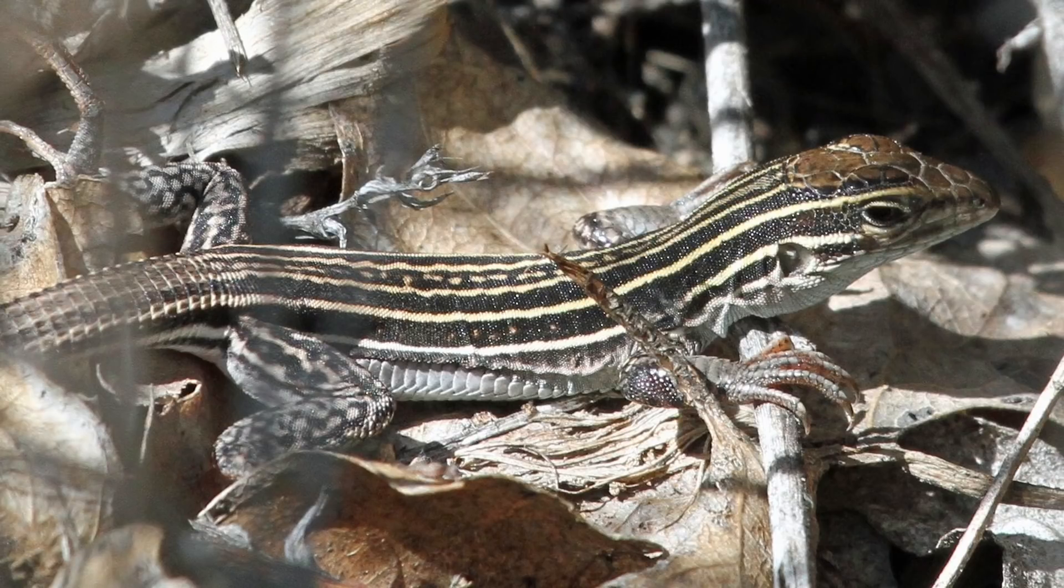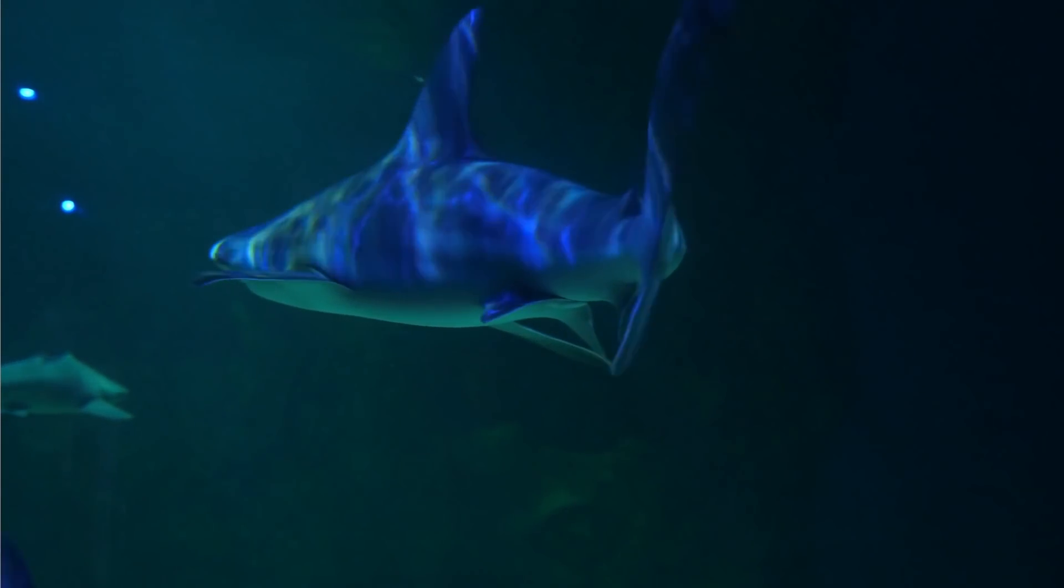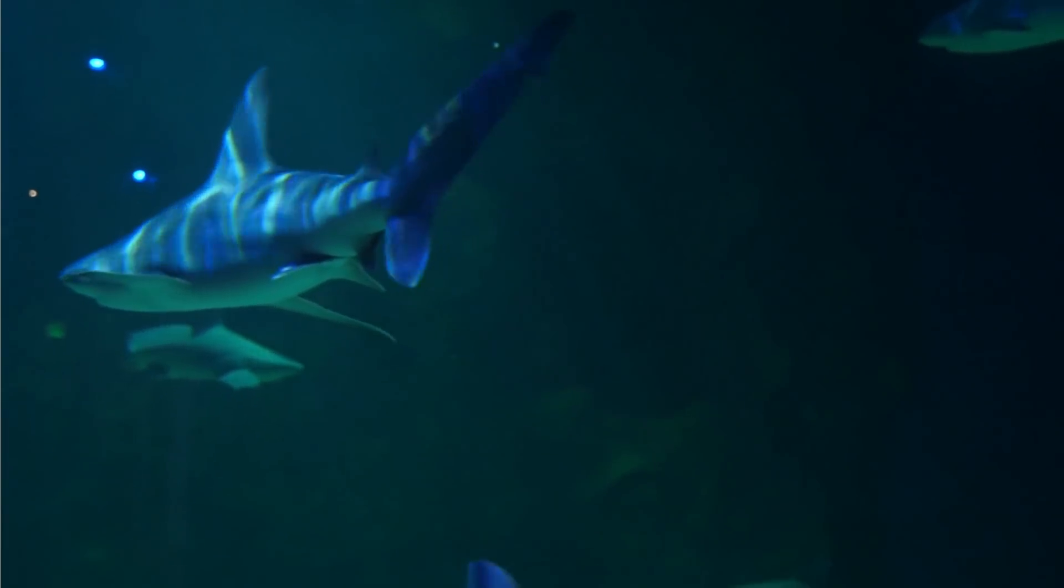The so-called New Mexico whiptail that you see right here is one of the better known examples of this particular process in more complex animals. More recently, scientists have also found several types of birds that occasionally go through parthenogenesis, and there are quite a lot of well-known cases of different sharks going through this as well, usually in some enclosed setting such as a huge fish tank or a sea world.